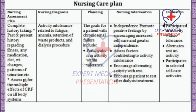Nursing interventions: encourage increased self-care and greater independence; assess factors contributing to activity intolerance; encourage alternating activity with rest; encourage patient to rest after dialysis treatment. Evaluation: patient participated in activity with tolerance, alternates rest and activity, and participates in selected self-care activities.